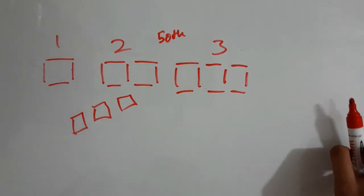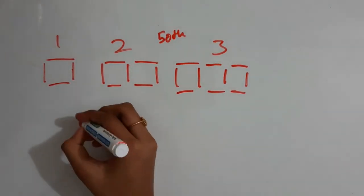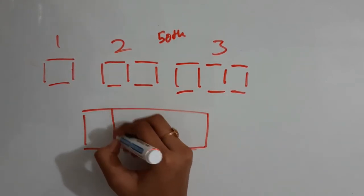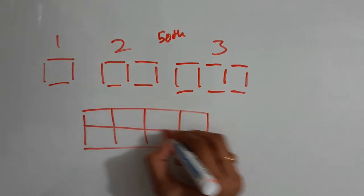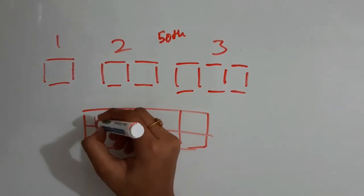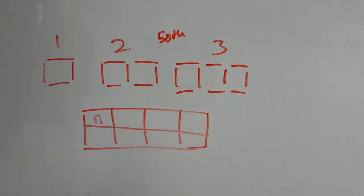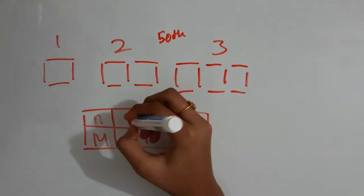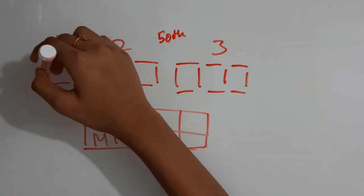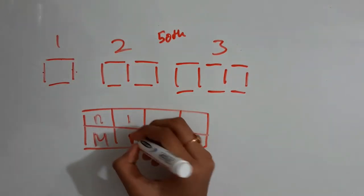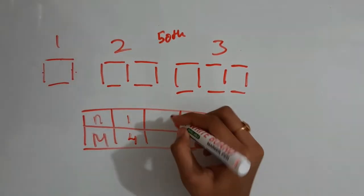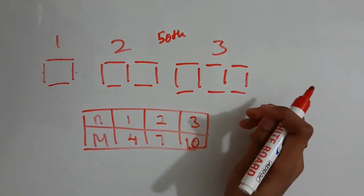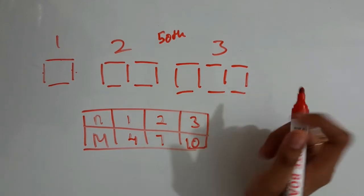There's a trick — draw a box and divide it into two columns. Write n, which stands for the number of figures, and m, which stands for matchsticks. The first figure has 4 matchsticks, the second figure has 7, and the third figure has 10.